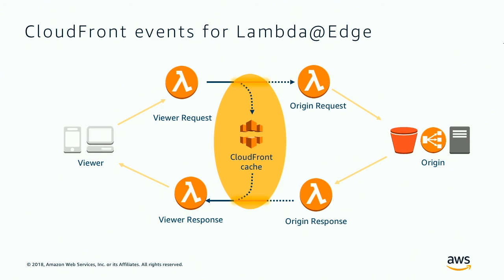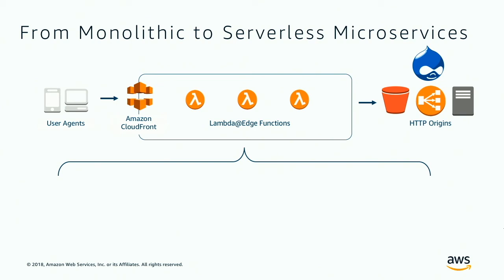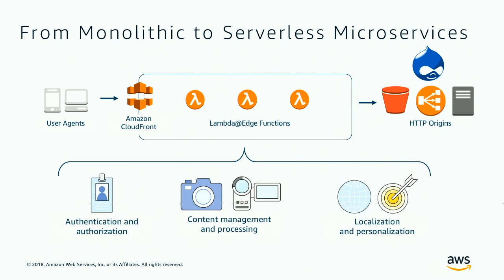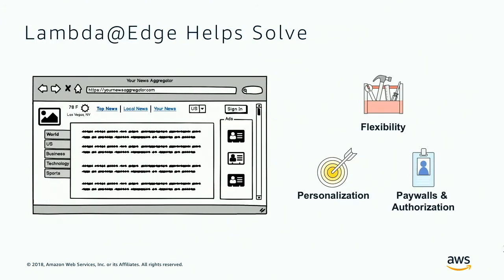As requests come in, you can have different Lambda functions dedicated to specific services — one purely for authorization and authentication, one for image manipulation, one for localizing and personalizing content for that viewer. This can be based on different types of origins, whether in AWS or not — or, as we're discussing today, a headless Drupal site. Lambda at Edge provides additional flexibility beyond what headless Drupal provides on its own, giving developers a toolset to imagine new ways to incorporate it into their own architecture.